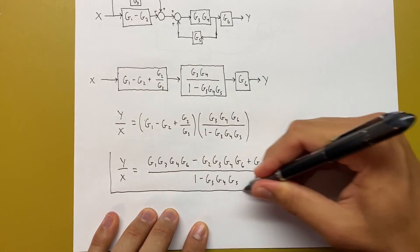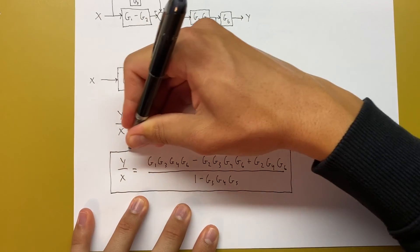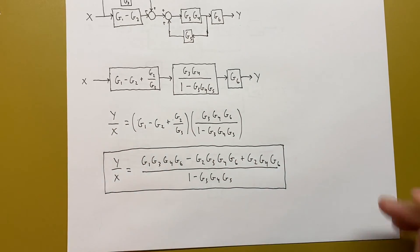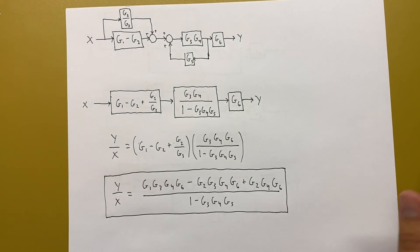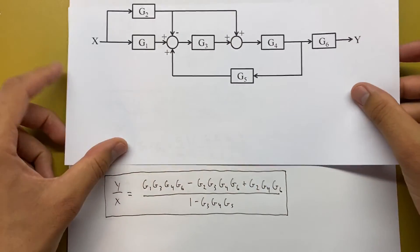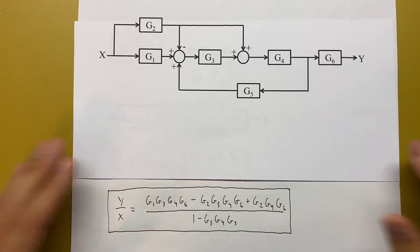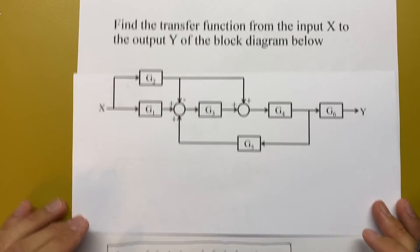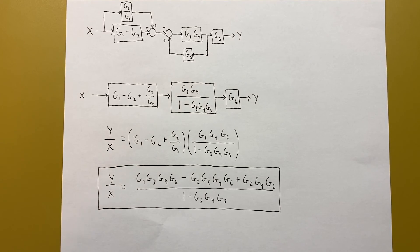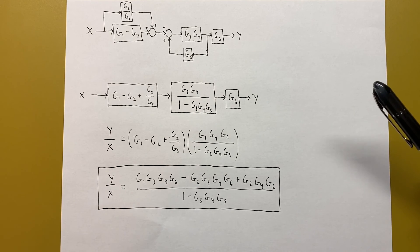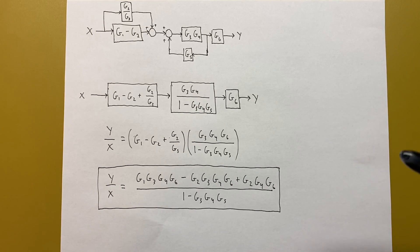This whole block diagram can be represented with just this one transfer function, and that's what the problem was asking for, so we're done. One last thing to note: I'm going to make a video where I solve this problem a different way. So if you don't like having to redraw all these block diagrams, you can check out my other video on how to do this — I'll link that below, just below where the video about deriving these rules is. Thanks for watching.